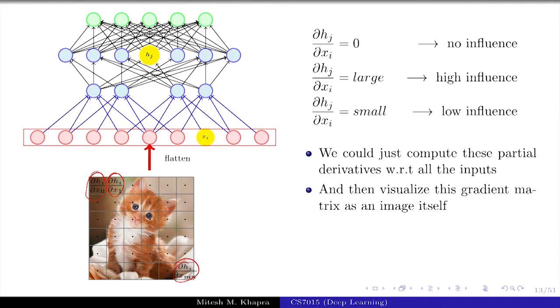I will just repeat it. If a neuron in the hidden layer is influenced by all the pixels in the input, that means it is not really discriminating, it is not really specialized. We want neurons which fire only for certain patches in the input, so that we know that this neuron is responsible for this kind of a pattern.